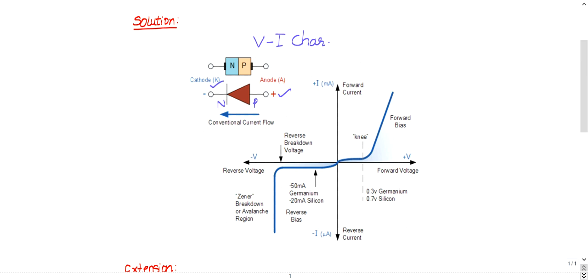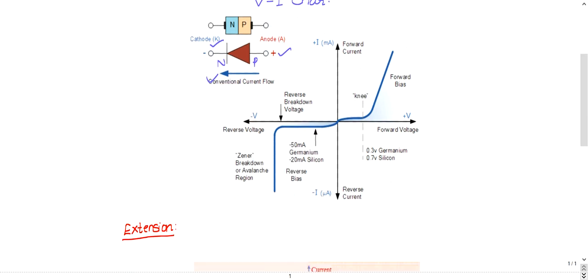The conventional current direction is this way. These details are not needed for this question, I'm just explaining. Now let's see the V-I characteristics. Initially, this is the practical diode I have considered.